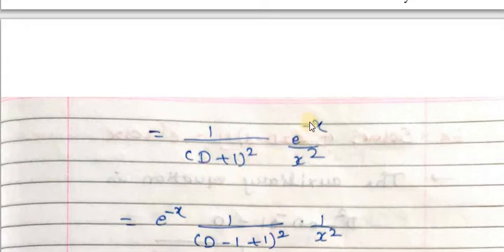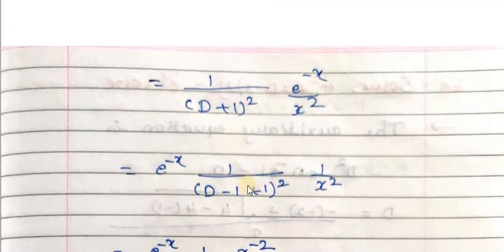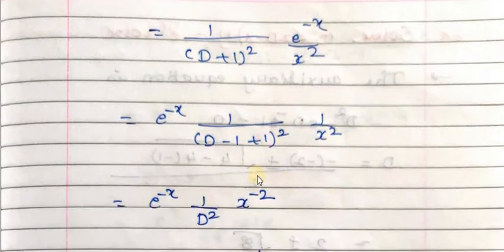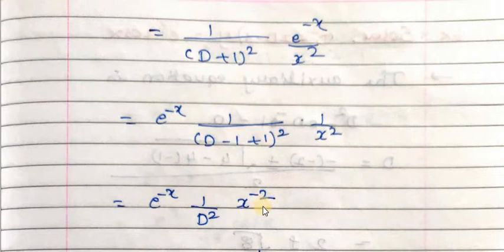Applying Case 4, we replace D by D plus a. Here a = -1, so we replace D by D minus 1. The (D - 1 + 1)² simplifies, and we write e raised to -x before the operator multiplied by one over x squared. The -1 + 1 cancels out, giving one over D² into x raised to -2.